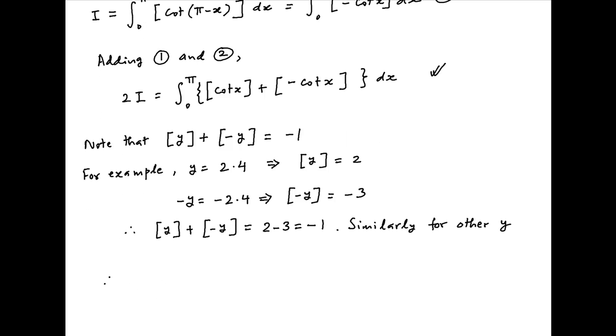Therefore, going back to the expression for 2i obtained earlier, we get 2i is equal to integral 0 to pi. The value of the integrand is minus 1 dx. This is equal to minus x between the limits 0 and pi.